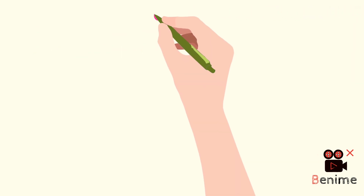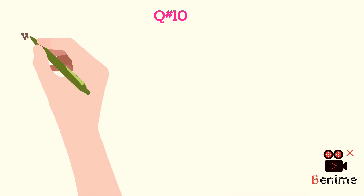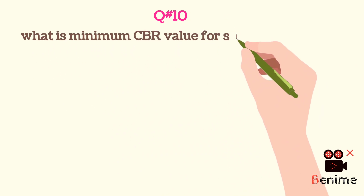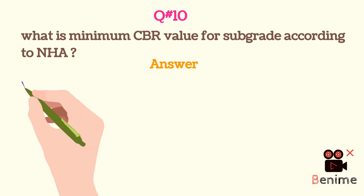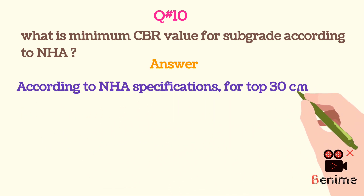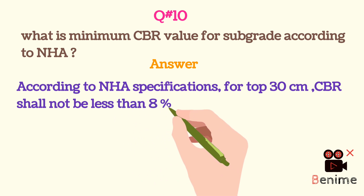Question 10: What is the minimum CBR value for subgrade according to NHA? According to NHA specifications, for the top 30 cm, CBR shall not be less than 8%.